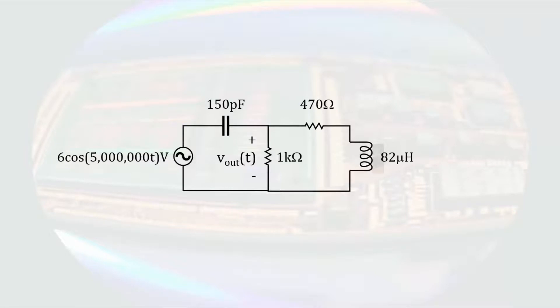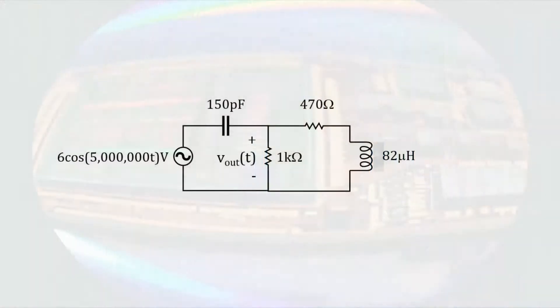We will first look at a circuit in the time domain containing a sinusoidal source and a couple of energy storage devices. Before we start our analysis, we need to look at the circuit and verify that all of the sources have the same angular frequency before we try to apply phasors. A quick glance at the circuit says that this is the case. We are tasked to determine the time-varying voltage across the 1 kilo ohm resistor. Before we can analyze the circuit, we must take this circuit to the phasor domain.